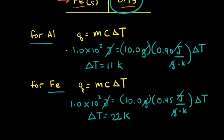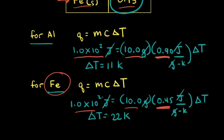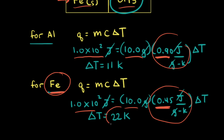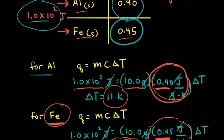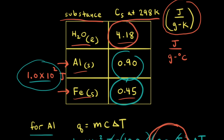From these two calculations, we added the same heat to the same mass — the only difference was their specific heats. Iron has a lower specific heat than aluminum, making its temperature easier to change. The lower the specific heat, the higher the change in temperature, and vice versa. Looking back at our chart, liquid water has a relatively high specific heat, meaning its temperature is relatively resistant to change.